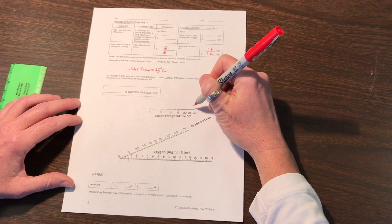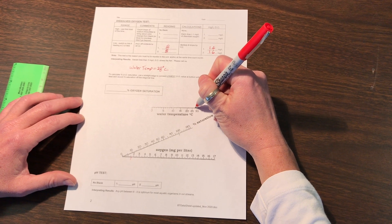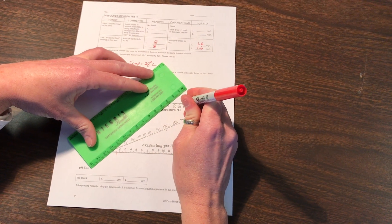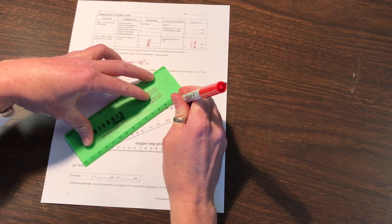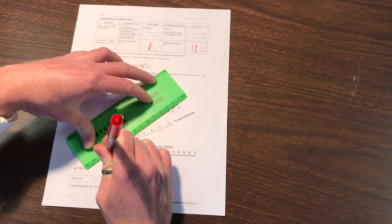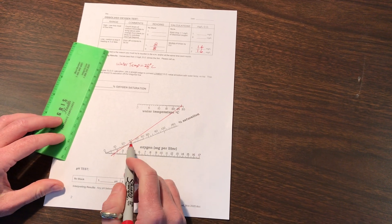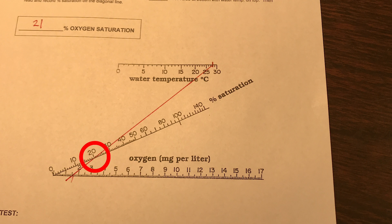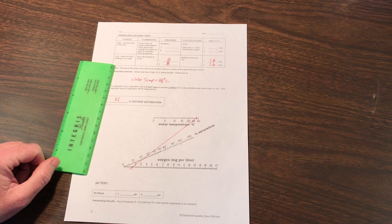Use our trusty ruler, connect our marks. Roughly where it crosses the line, it's looking about 21% for the oxygen saturation. Where my red marker line crosses here, it's about 21%. Put that in there, and that roughly calculates our percent oxygen saturation.